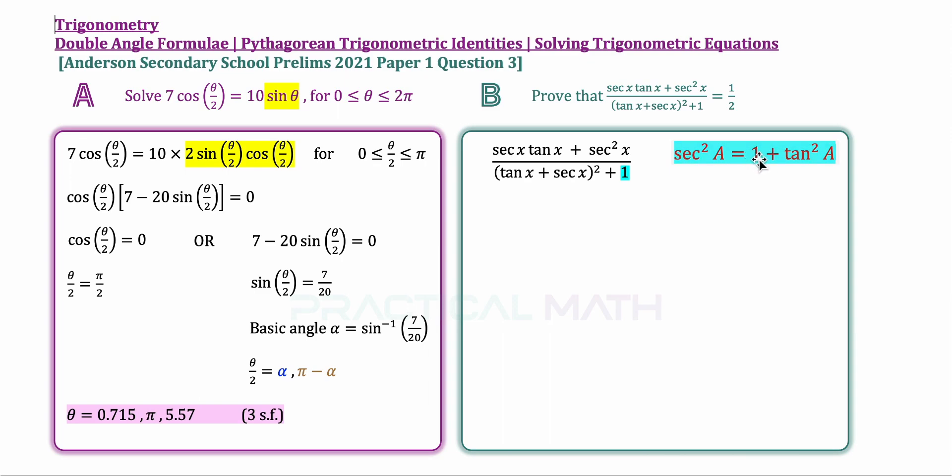Setting 1 to be the subject, 1 can be written as secant square A minus tangent square A, and replacing that into our functions in our left-hand side, 1 can be written as secant square x minus tangent square x. At the same time, for the bottom, we do a simple expansion. If we square the first term, we have tangent square x. If we square the last term, we have secant square x. If we do 2AB, we have 2 tangent x secant x. The top remains the same.